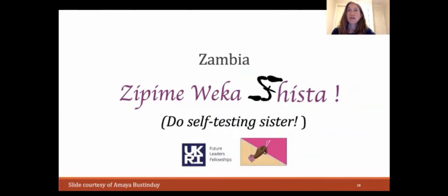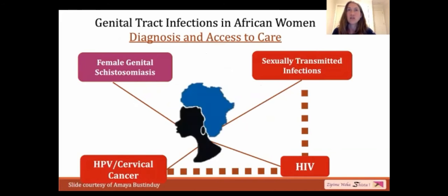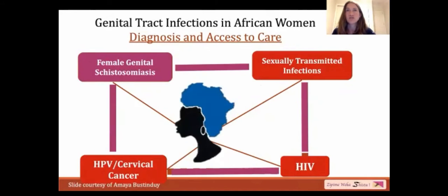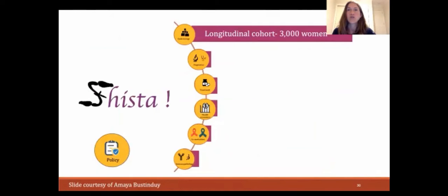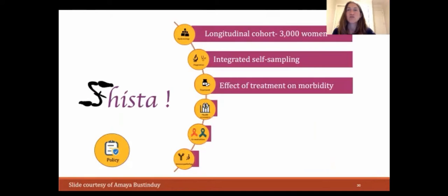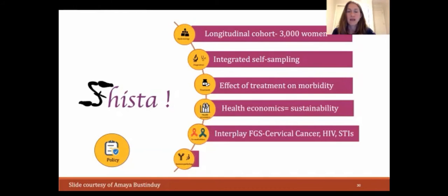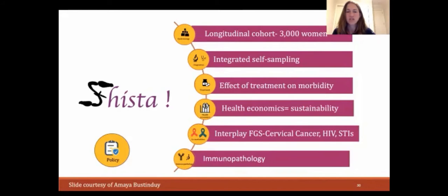There will also be exciting upcoming work in Zambia regarding self-testing. The vision of this study is to create and evaluate an integrated approach to the diagnosis of genital tract infections and access to care, acknowledging the complex interplay between FGS, HIV, HPV, cervical cancer, and sexually transmitted infections. The study will follow a longitudinal cohort of 3,000 women who will receive integrated self-sampling. It will also investigate the effects of praziquantel treatment on morbidity, include a health economics evaluation, and evaluate the interplay of FGS, cervical cancer, HIV, and STIs, as well as further attention to immunopathology.